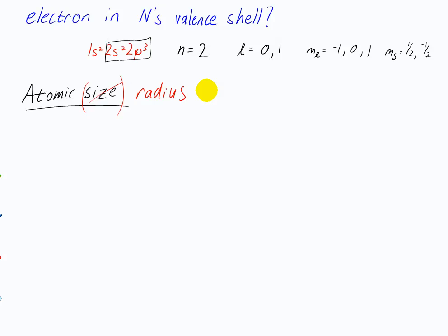What do you think takes up more space — has a bigger radius, assuming it's a sphere? It's the same because they're in the same group. But actually xenon is bigger because more electrons means more shells. You're right that xenon is bigger — as you have more electrons, the outermost shells get larger.